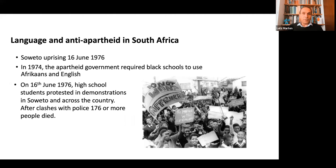One example is the Soweto uprising in South Africa in 1976, when school children demonstrated against the use of Afrikaans in schools — interestingly, pushing for English rather than Zulu or IsiNdebele. It was a turning point for the end of apartheid, even though it took almost another 20 years. It was a real eye-opener for the world, and for many people in South Africa that something was really wrong with the political system.